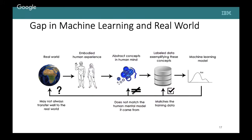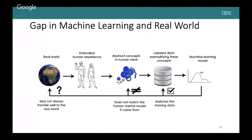This exposes a broader flow: we have embodied human experience, create abstract concepts, and use those to create labeled data. We train a machine learning model that matches this labeled data very well — achieving 99% or even claimed 100% performance — but it does not truly match the human mental model it came from. In constrained or ideal scenarios it may work, but in the presence of adversarial attacks or real-world distribution shifts, it fails.